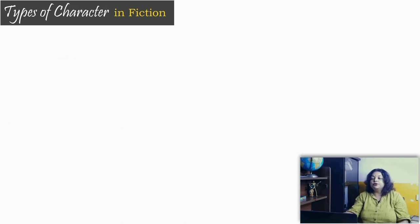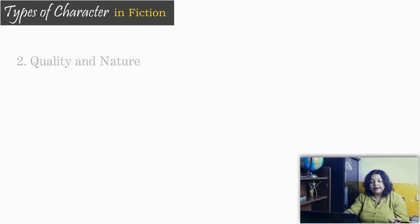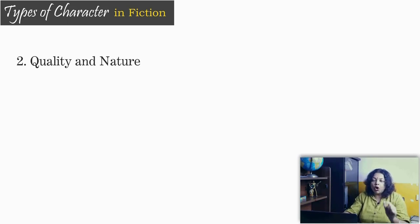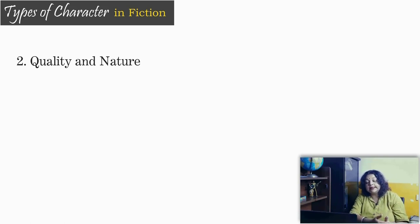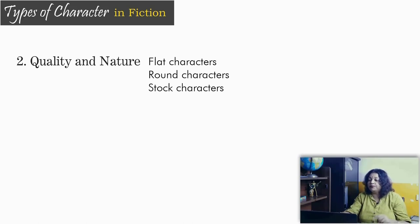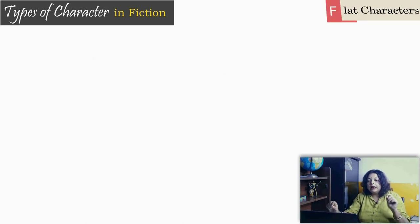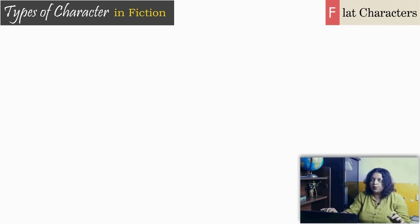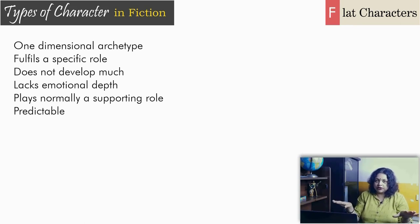Now we come to the second method of categorization, which is based on the quality or nature of characters. Based on quality or nature, we have three kinds of characters: flat characters, round characters, and stock characters. Pay very close attention because this is very tricky at times.